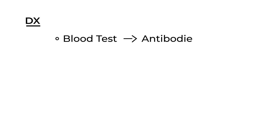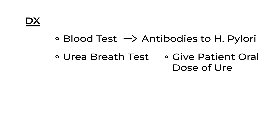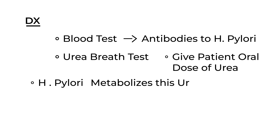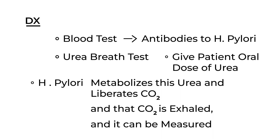In terms of diagnosis, there are two main ways in addition to symptoms. The first is a blood test detecting antibodies to H. pylori. The second is the urea breath test: the patient is given an oral dose of urea, which H. pylori metabolizes and liberates CO2. That CO2 is exhaled and, because it's been labeled, it can be measured.